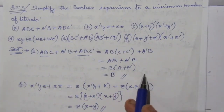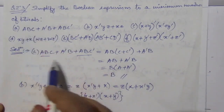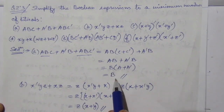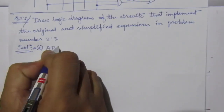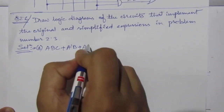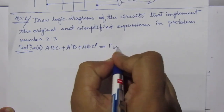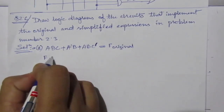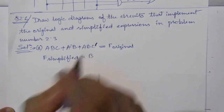From these expressions, we have to draw the logic diagram for the original expression as well as after simplification. Similarly for part B and so on. We will draw the logic diagrams one by one. The first problem is ABC + A̅B + ABC̅. This is F original. And F simplified equals B.